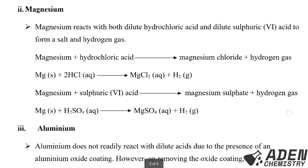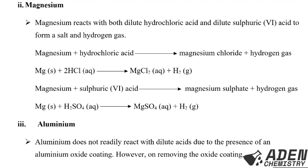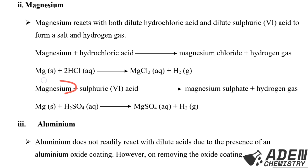Magnesium reacts with both hydrochloric acid and dilute sulfuric acid to form a salt and hydrogen gas. Remember, when a metal reacts with dilute acid we form salt and hydrogen gas. Magnesium plus hydrochloric acid gives magnesium chloride plus hydrogen gas: Mg + 2HCl → MgCl₂ + H₂. Magnesium plus sulfuric acid gives magnesium sulfate plus hydrogen gas: Mg + H₂SO₄ → MgSO₄ + H₂. This second reaction is already balanced.